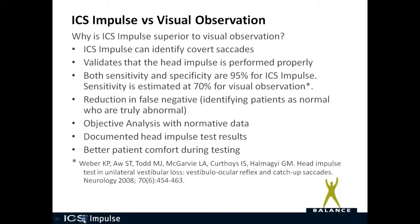ICS Impulse provides objective analysis with normative data and documented head impulse test results, rather than just a handwritten note as with visual observation. It also provides better patient comfort during testing. When doing visual observation, you have to do quite large head impulses — neurologists currently using visual observation are often performing head impulses over 300 degrees per second. With ICS Impulse, you don't need that big a head movement; in fact, that big a movement causes artifacts. Keep your head impulses in the 150 to 200 degrees per second range, and patient comfort is increased.